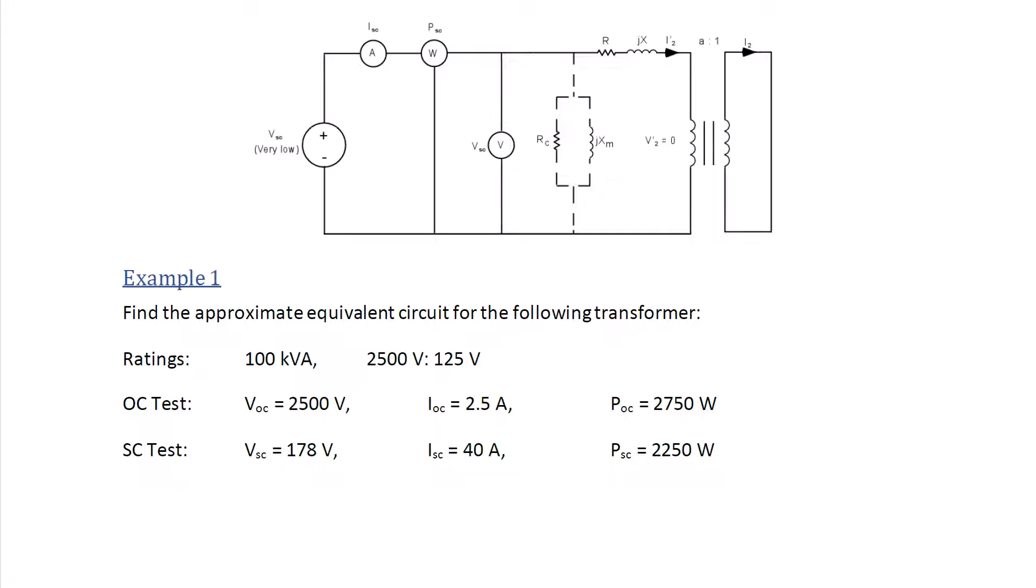Now let's try example one. Find the approximate equivalent circuit for the following transformer. The ratings are 100 kVA, 2500 volts to 125 volts. For the open circuit test, VOC equals 2500 volts, IOC equals 2.5 amps, POC equals 2750 watts. For the short circuit test, VSC equals 178 volts, ISC equals 40 amps, and PSC equals 2250 watts.